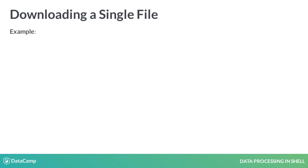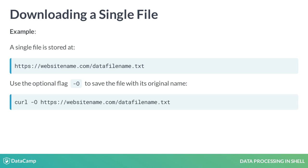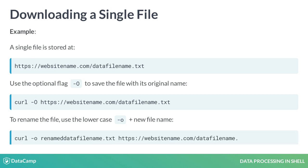Let's download a single file stored at this hypothetical URL using curl. To save the file with its original name, data_file_name.txt, use the option flag dash uppercase O. This reads: curl -O followed by the file URL location. To save the file under a different name, replace dash uppercase O with dash lowercase O and the new file name. Now it reads: curl -o followed by the new file name and the file URL location.